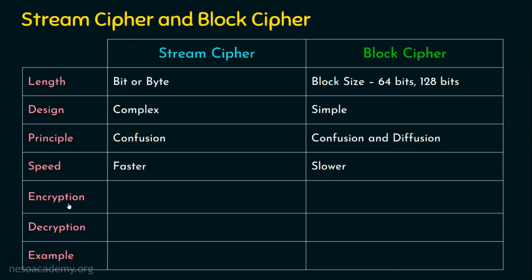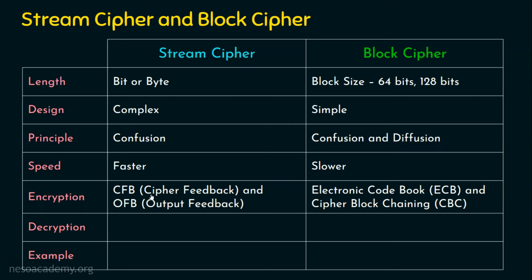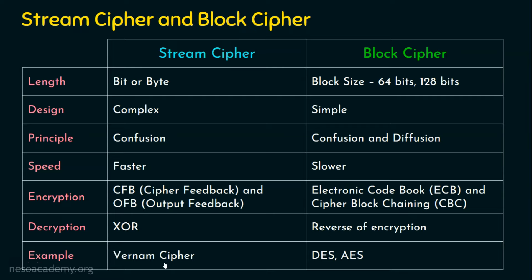Coming to the encryption method used by stream cipher, it is generally CFB (Cipher Feedback mode) or OFB (Output Feedback mode). Whereas block cipher uses ECB (Electronic Code Book) or CBC (Cipher Block Chaining). The modes of operation will be covered elaborately in this chapter. For decryption, stream ciphers generally use XOR operation, so the reverse operation is simply XOR again. Whereas in block cipher, decryption is the reverse of the encryption. Finally, an example of stream cipher is the Vernam cipher, while examples of block cipher include DES (Data Encryption Standard) and AES (Advanced Encryption Standard).